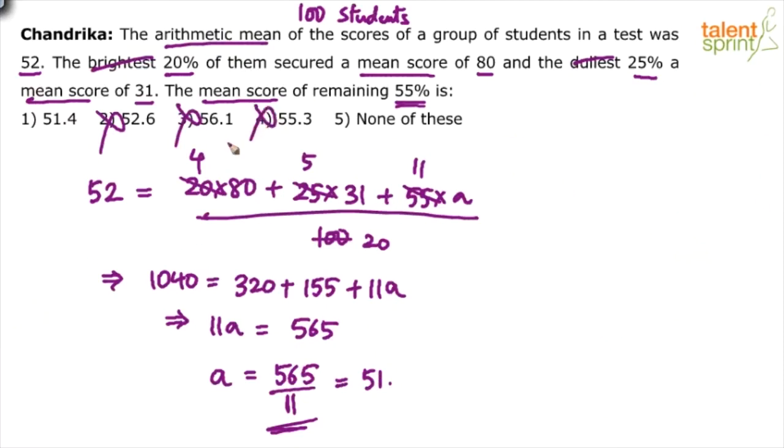So option 2, 3 and 4 are eliminated. Either option 1 or option 5 none of these. I think it will be 51.3. 565, see I'm writing what I'm doing mentally so that you can understand what is going on in my head when I'm doing this calculation.